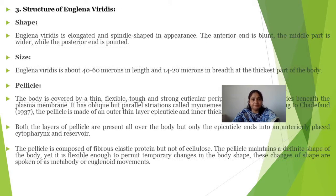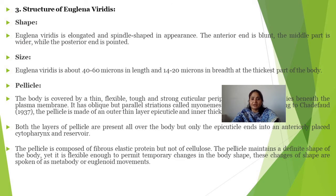If we talk about the structure, Euglena is spindle-shaped and elongated. The anterior end is blunt and the middle part is wider. The posterior end is pointed. Euglena viridis is about 40–60 microns in length and 14–20 microns in breadth at the thickest part of the body.